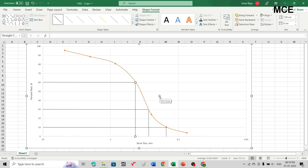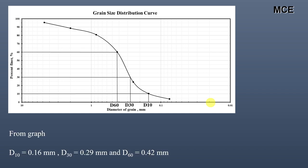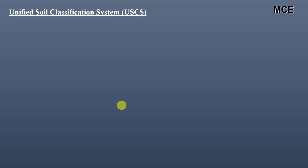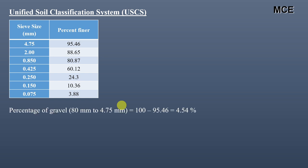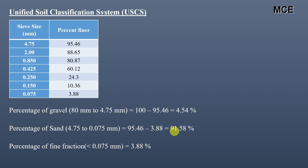With D10, D30, and D60 determined, we can now classify the soil using the Unified Soil Classification System. The percentage of gravel, from 80 mm to 4.75 mm, is 100 minus 95.46, which is 4.54%. The percentage of sand, from 4.75 mm to 0.075 mm, is 95.46 minus 3.88, which is 91.58%. The percentage of fine fraction, which is less than 0.075 mm, is 3.88%.